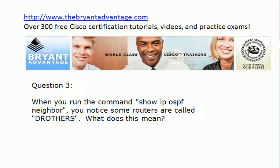Next question, we're going to swap over to OSPF for a moment. When you run show IP OSPF neighbor on a router, you'll notice that some routers in your network are called DR Others. What does that mean?